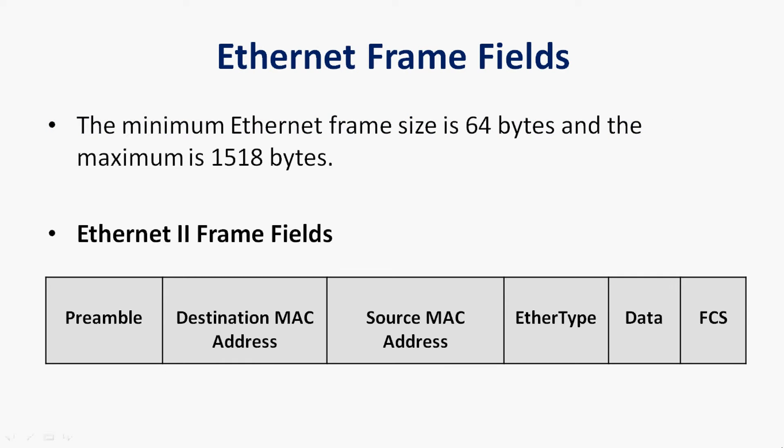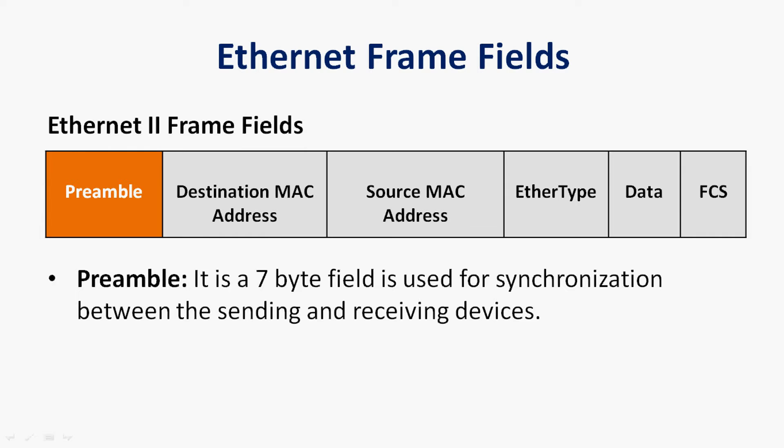The minimum Ethernet frame size is 64 bytes and the maximum is 1518 bytes. The Ethernet II frame fields are: preamble, destination MAC address, source MAC address, EtherType, data, and FCS. The preamble is a 7-byte field used for synchronization between the sending and receiving devices.